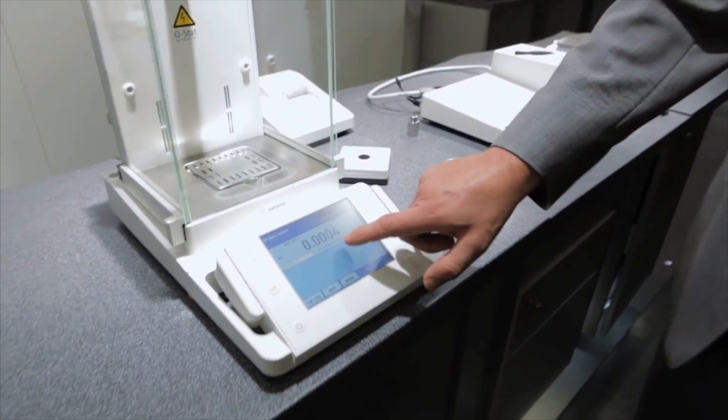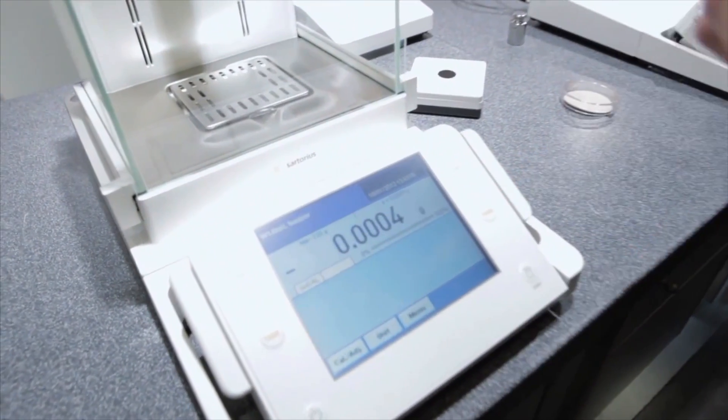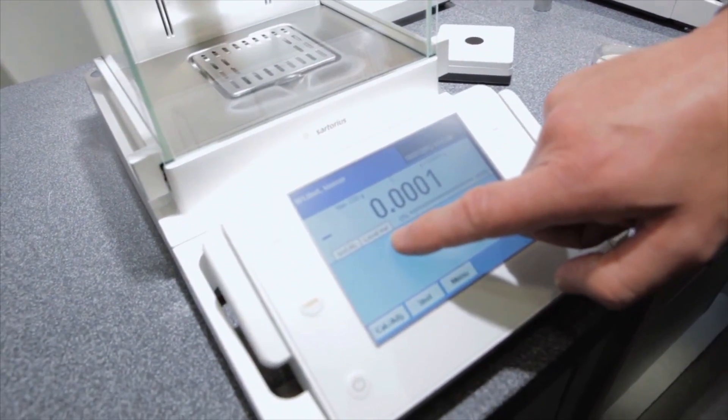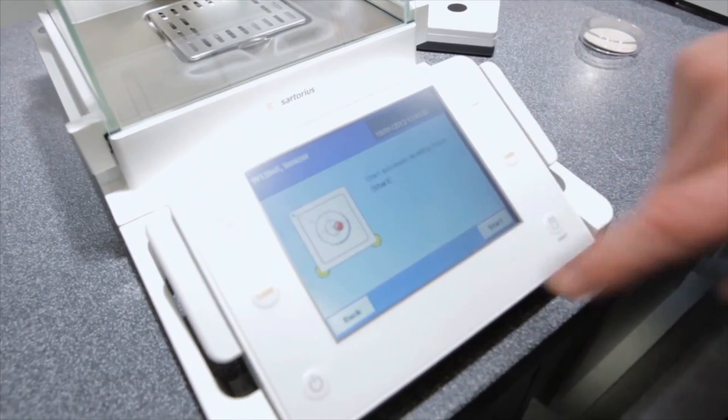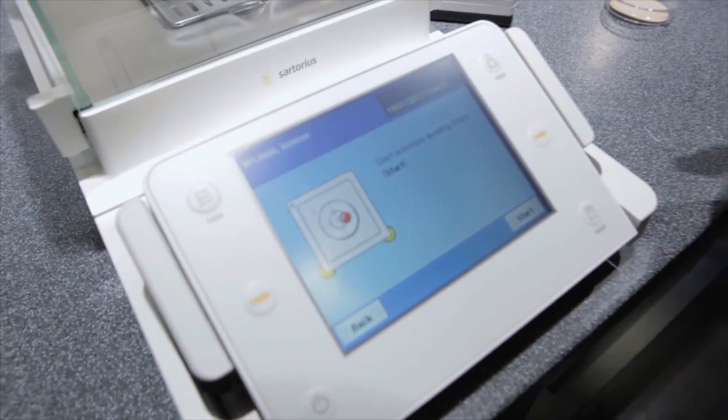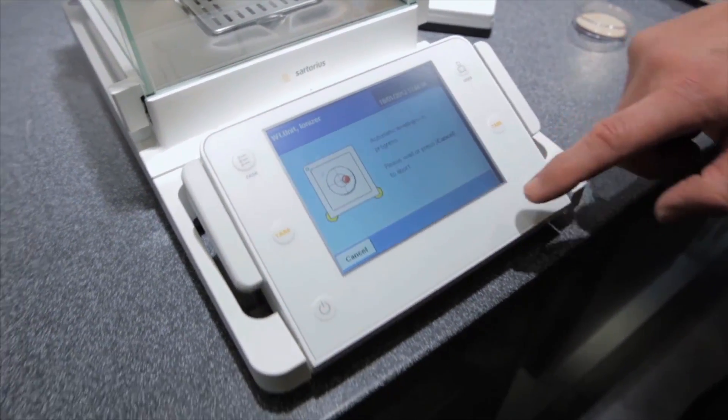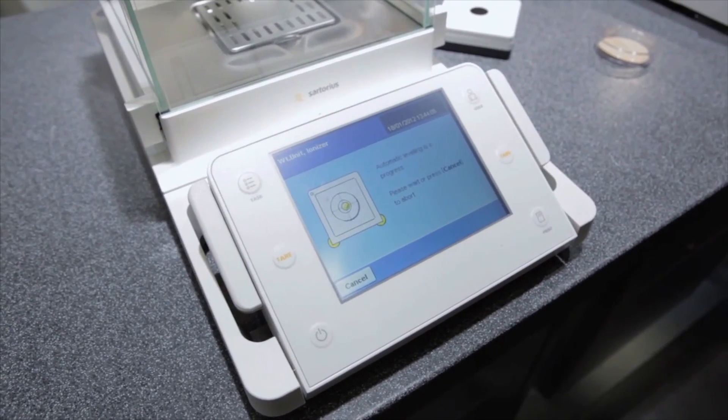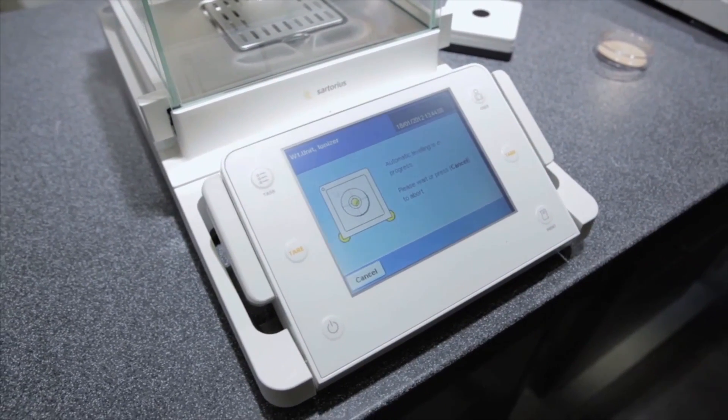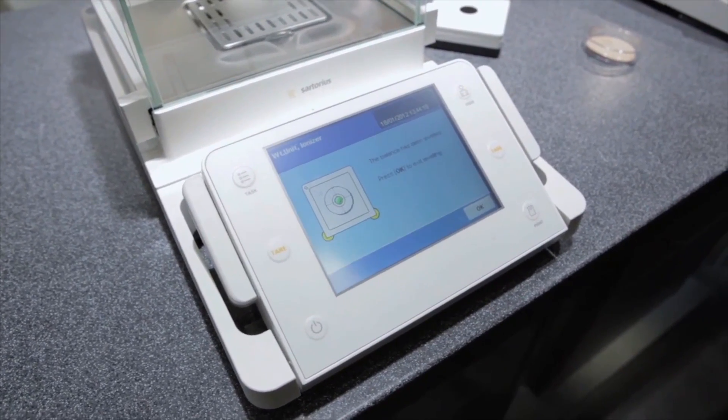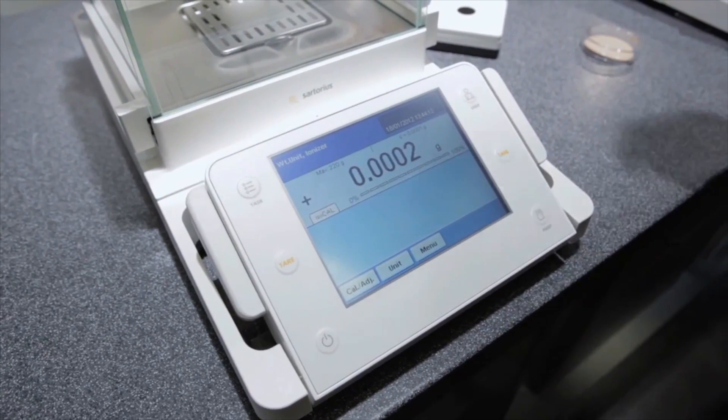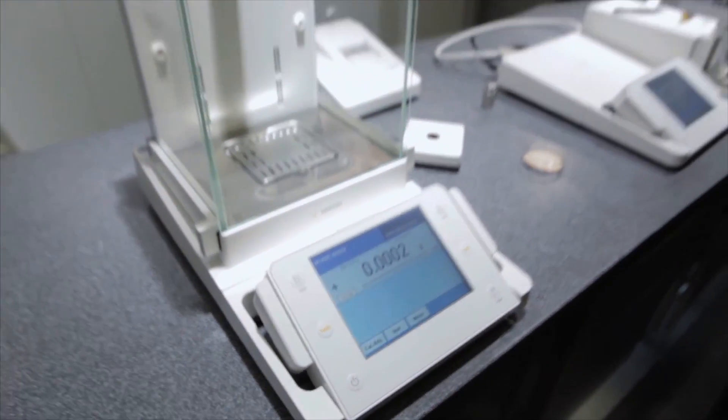Here we have the possibility as well to be sure that we're working accurately. The balance is saying it should be level. All I have to do now is to push the key and with the option of automatic leveling press start and the electronic bubble is automatically adjusted to bring the balance back into level. This ensures that the weighing is accurate and at all times giving the right result that you should have.